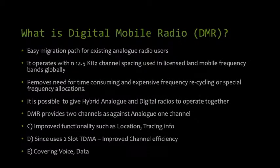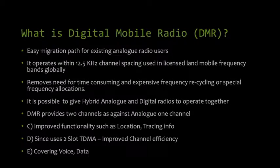DMR Part Two provides an easy migration path for existing analog radio users. It gives you a very smooth move to digital without disrupting the analog system. It operates within the 12.5 kHz channel spacing used in licensed land mobile frequency bands globally, so no extra band facility is needed. This removes the need for time-consuming and expensive frequency recycling. It is also possible to operate hybrid analog and digital radios together, as many modern radios support both 2 meters and 70 centimeters as well as DMR.